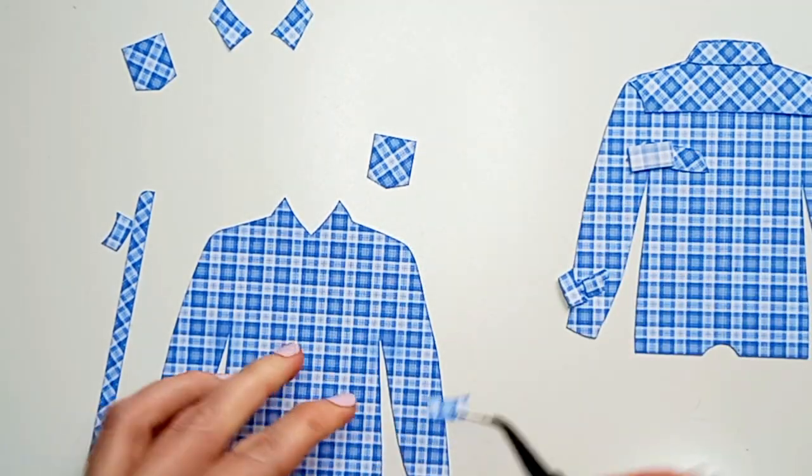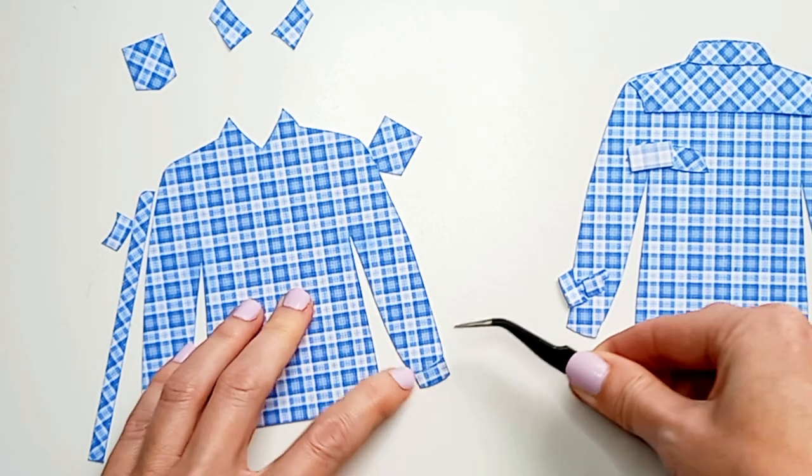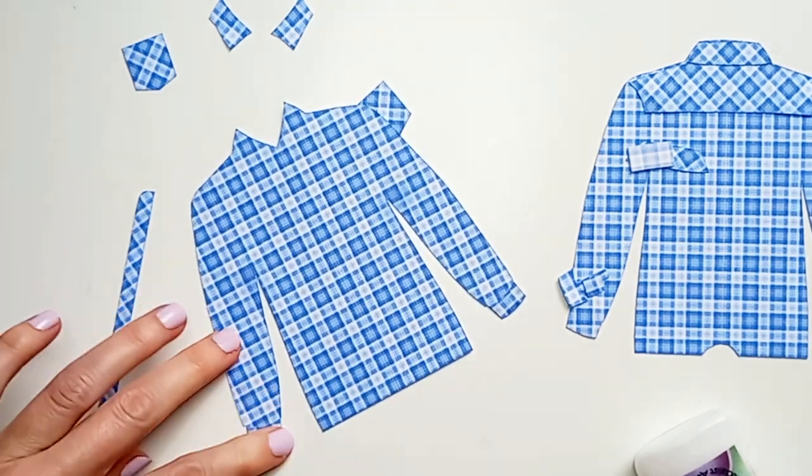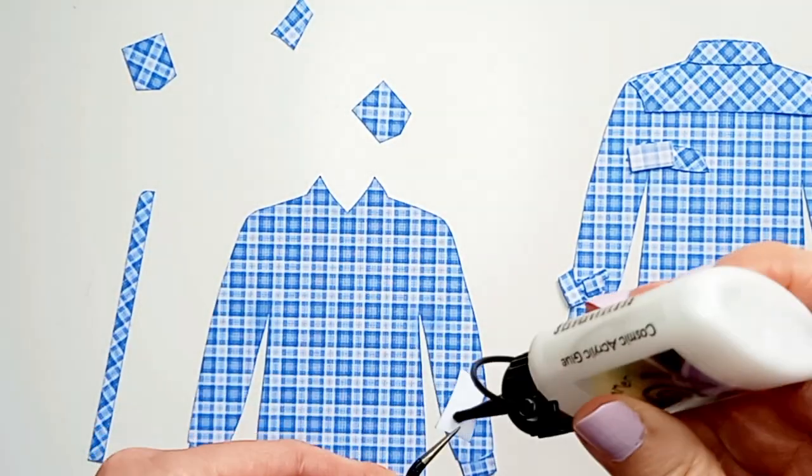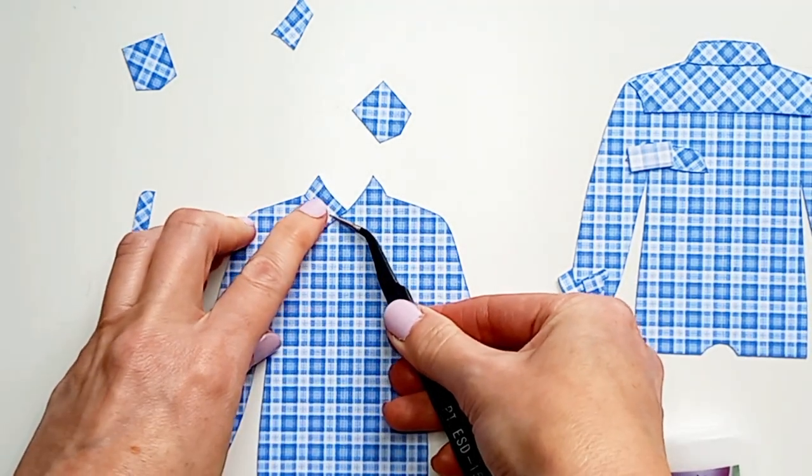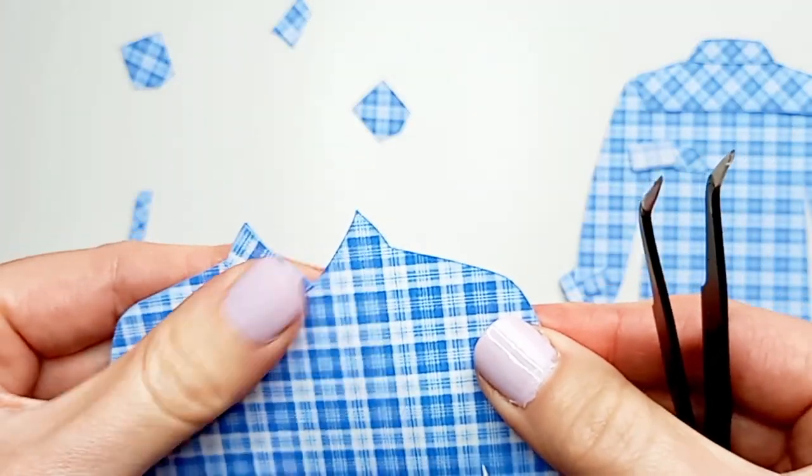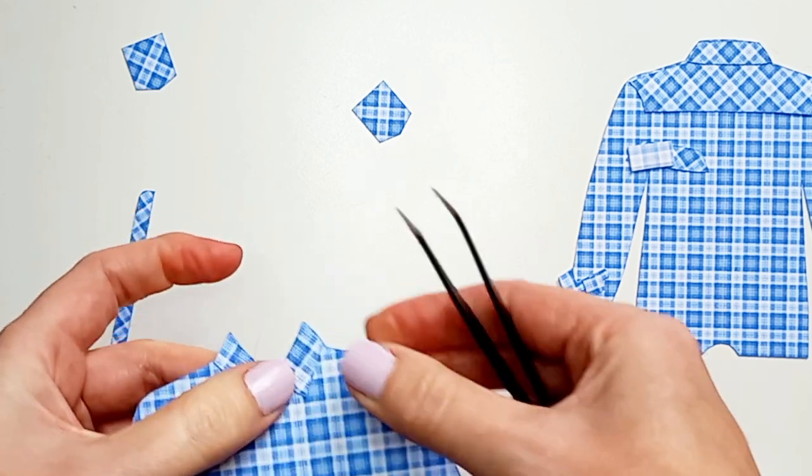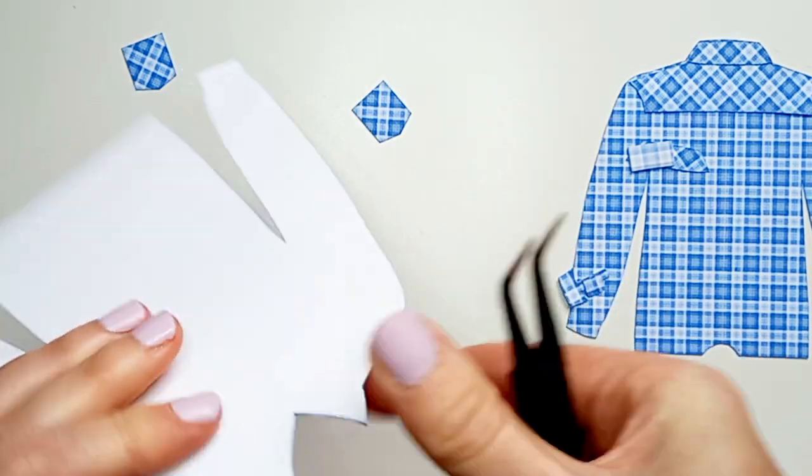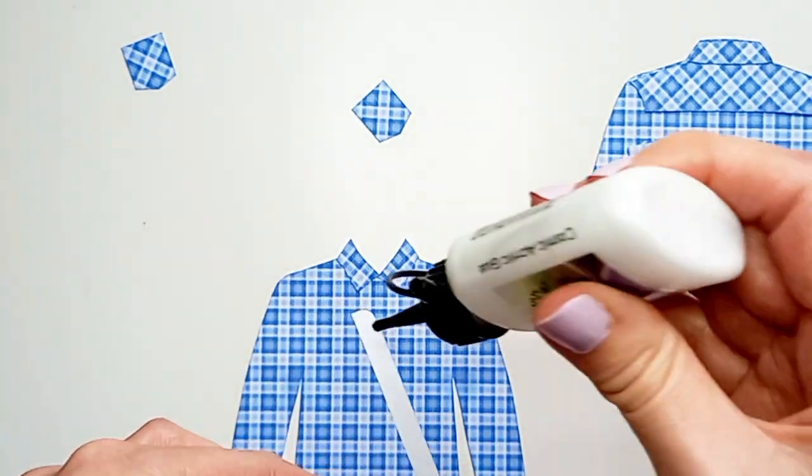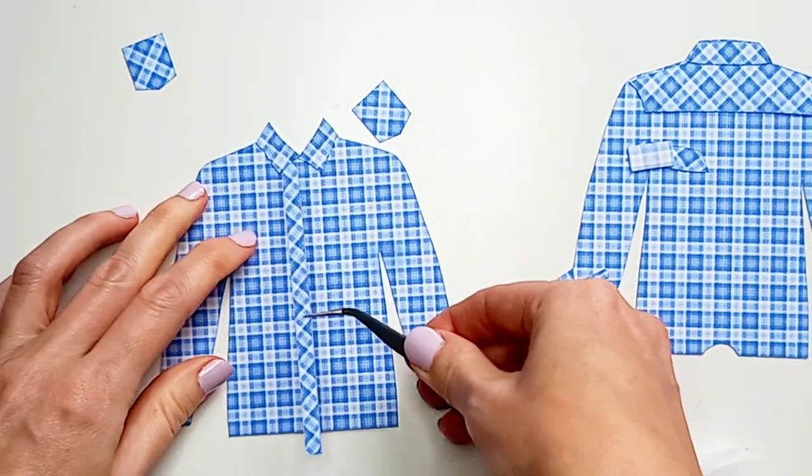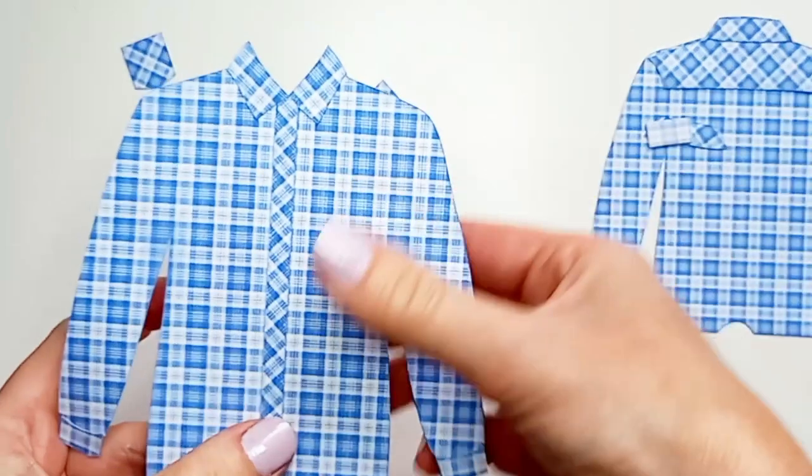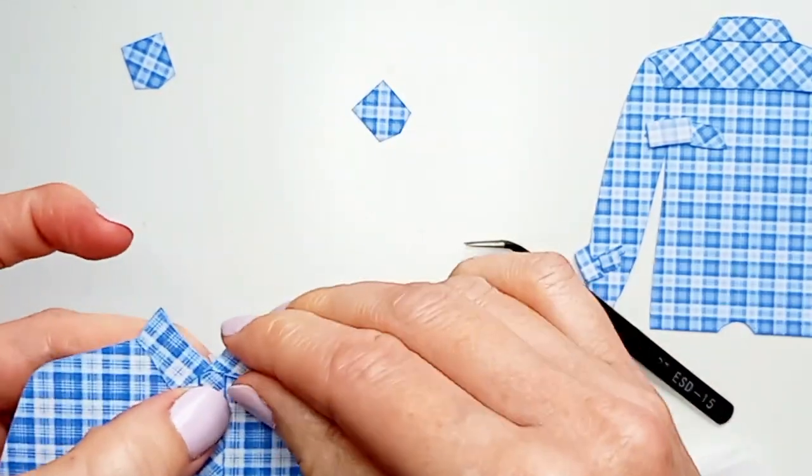So for the front of the shirt I'm just going to start by gluing on the two cuffs. Then I'm going to add the two front collar pieces. Now these should meet in the middle and you want to make sure that it's all lined up at the top there and that you can't see anything from the other side. Next I'm going to take this long thin piece, this is called the placket, I'm just going to make sure it's lined up straight down the middle. Then just tuck that top bit just underneath the collar there.